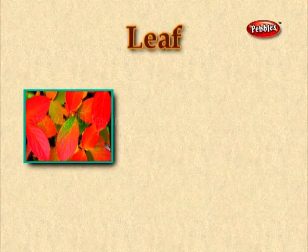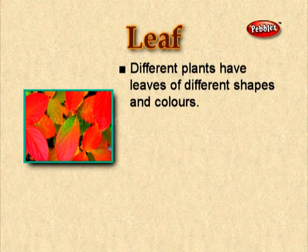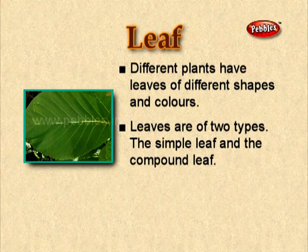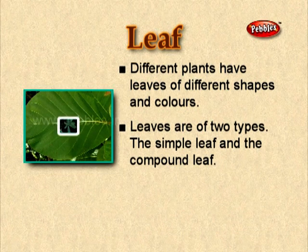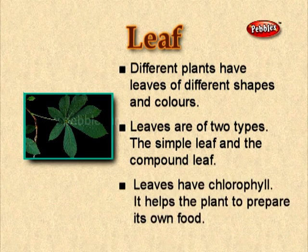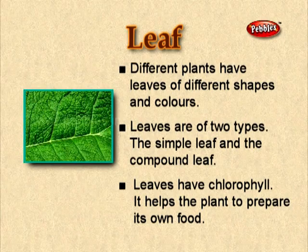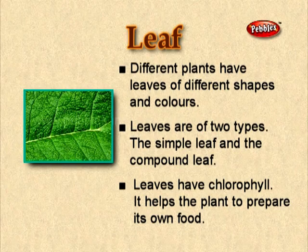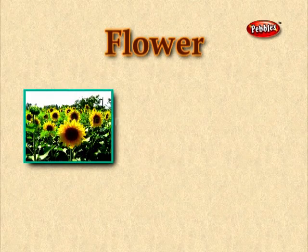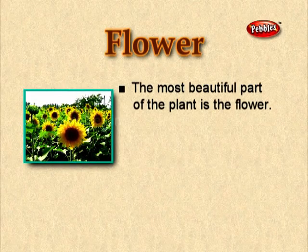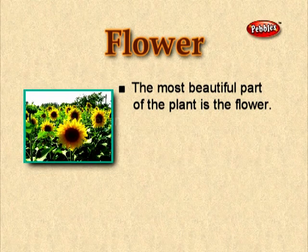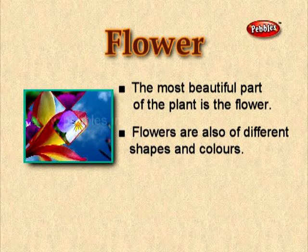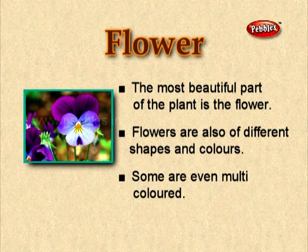The leaf. Different plants have leaves of different shapes and colours. Leaves are of two types: the simple leaf and the compound leaf. Leaves have chlorophyll, which helps the plant to prepare its own food. The flower — the most beautiful part of the plant. Flowers are also of different shapes and colours, and some are even multicoloured.